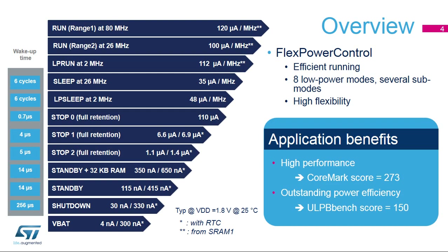STM32L4 devices feature flex power control, which increases flexibility in power mode management and further reduces the overall application consumption. Run mode can support a system clock running at up to 80 MHz, with only 120 microamps per MHz. At 26 MHz, the consumption is even lower — 100 microamps per MHz.